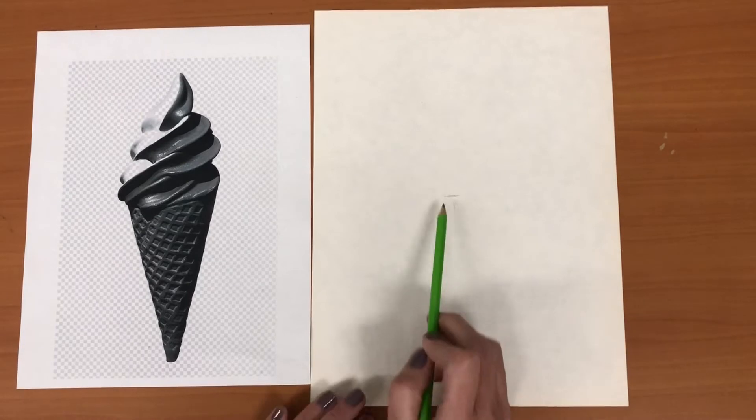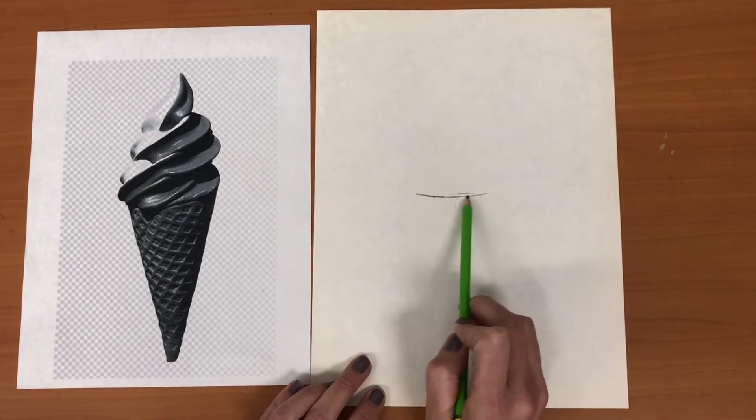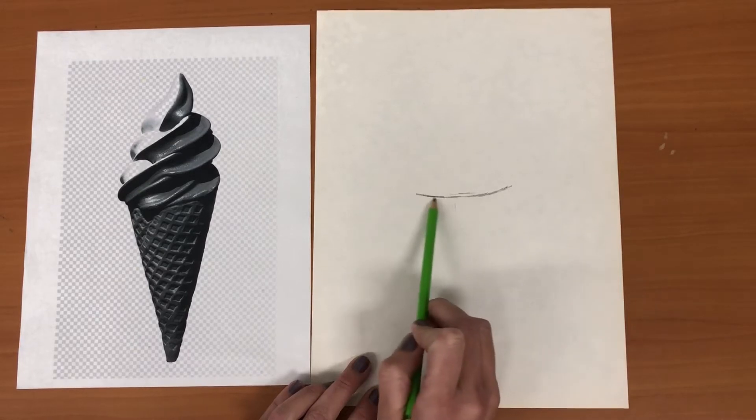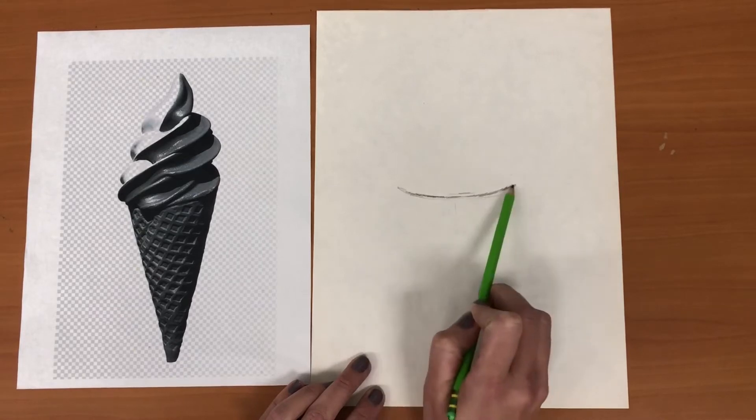Okay now I'm gonna bring my cone out to the left and bring my cone out to the right. This is gonna be a three-dimensional form so we don't want to use a straight line you want to use a curved line.